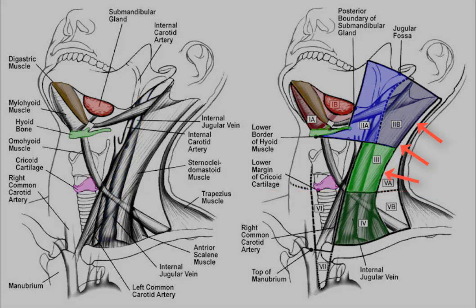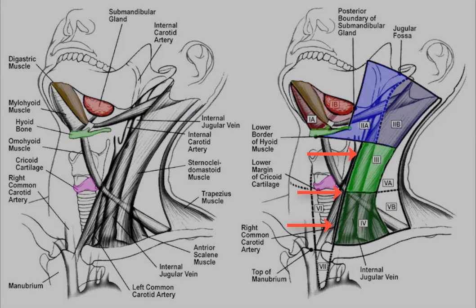The posterior border of level 2b and 3 is the posterior margin of the sternocleidomastoid muscle, but when we get down to level 4, it also includes the posterior border of the anterior scalene muscle. The anterior border of level 3 and 4 is the internal or common carotid artery depending on where you are in the neck.